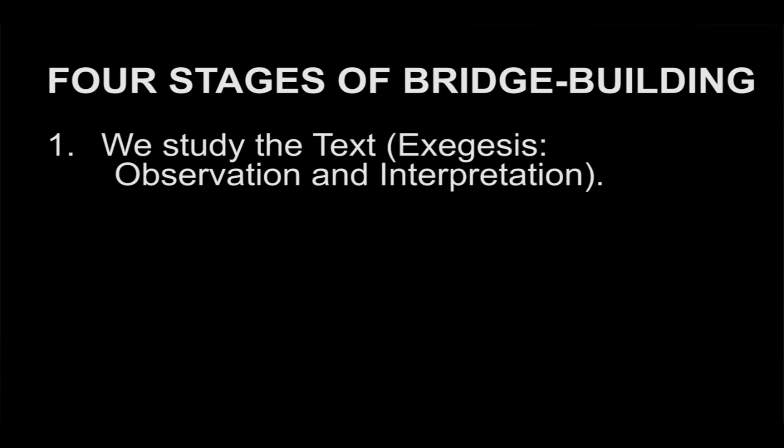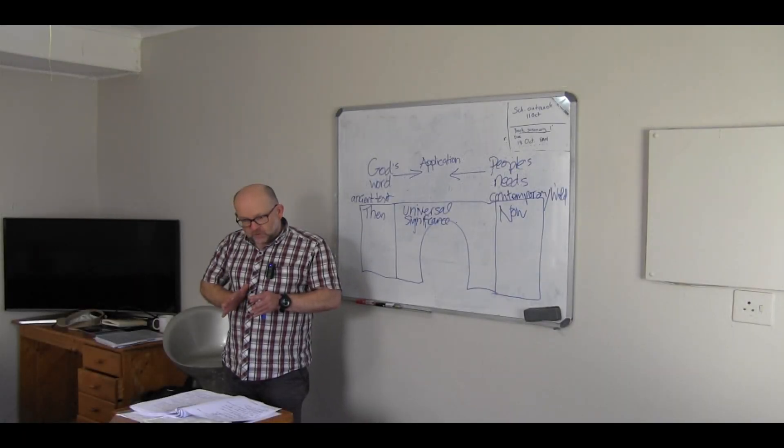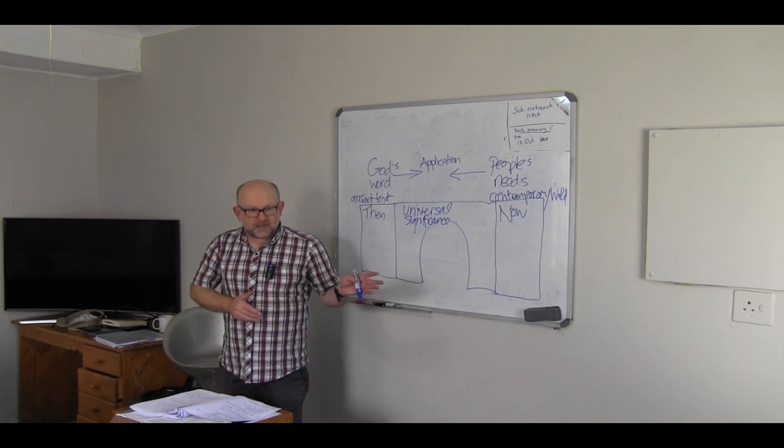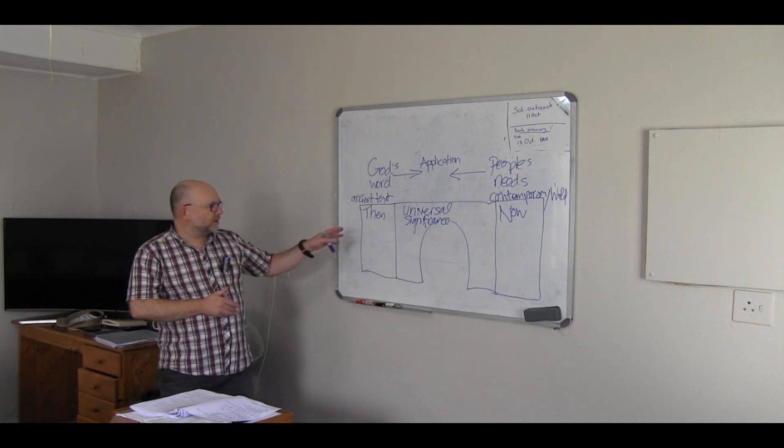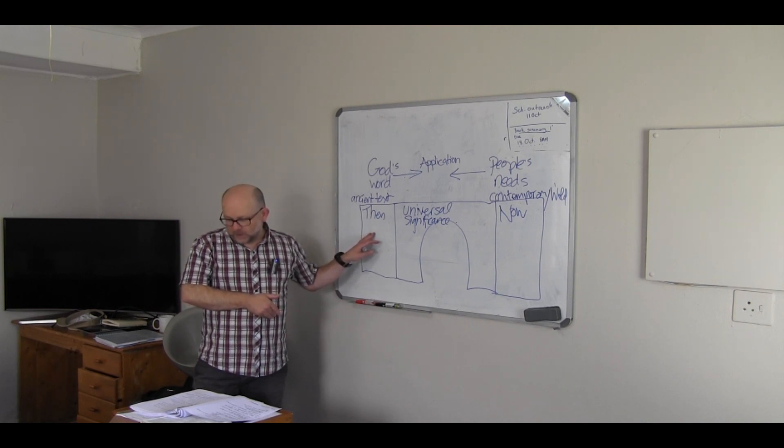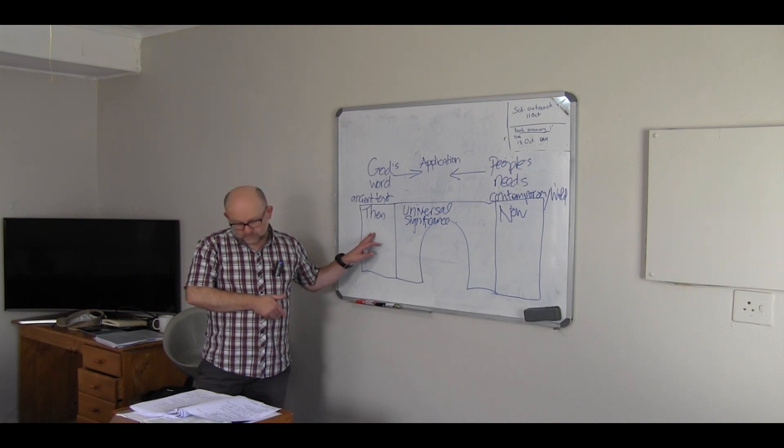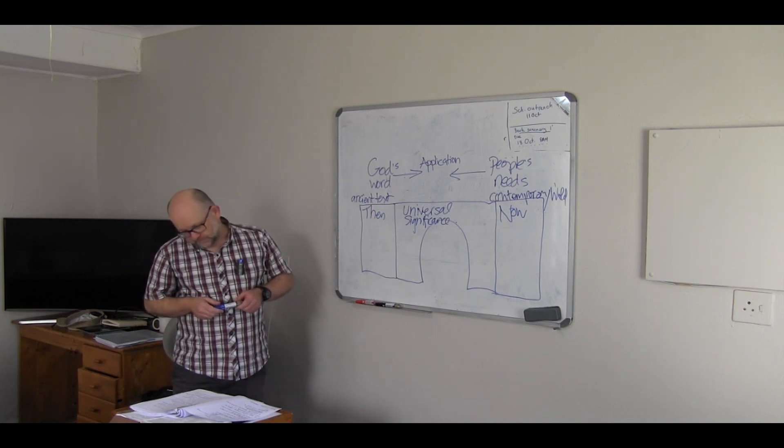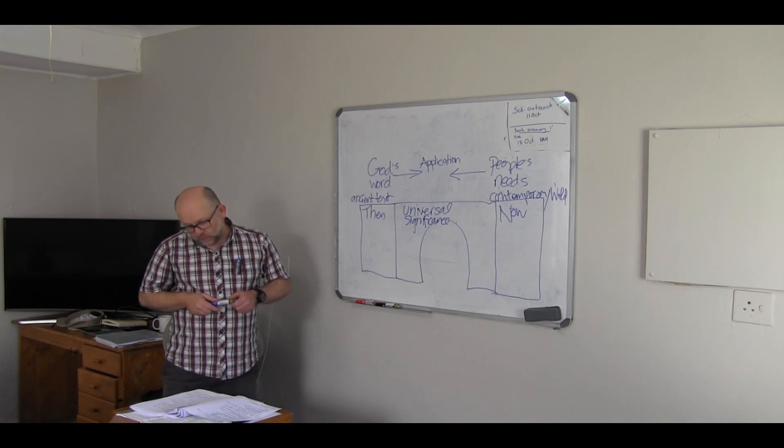Four stages of bridge building. Firstly, we study the text. That's exegesis. It's observation and interpretation. We're asking all sorts of questions. What did it say? What did it mean? What did it mean to the original hearers? And then what does it say? And what does it mean to us?